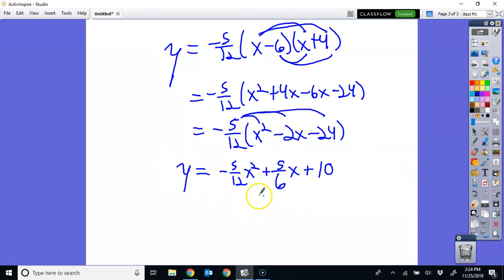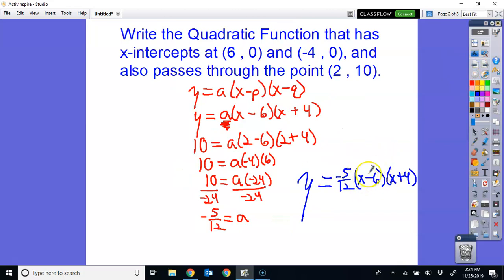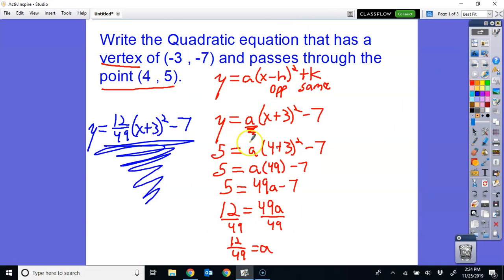So this would be what we call standard form. So you can get that into standard form by just multiplying that out. Same thing with the vertex form. You could put this into standard form. Would be multiplying it.